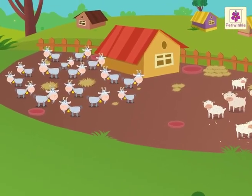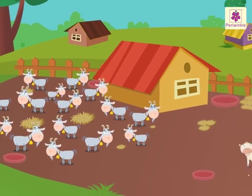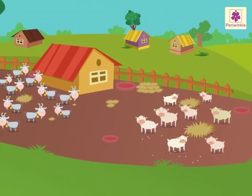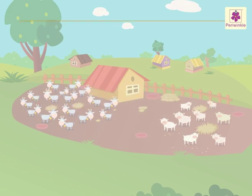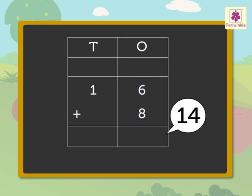Look at the herd of animals. There are sixteen goats and eight sheep in it. Now, let's see how many animals there are in all. Here we have to add sixteen and eight to find out the total number of animals. Add the ones, that is, six plus eight is equal to fourteen.